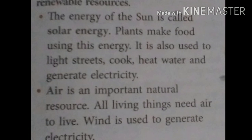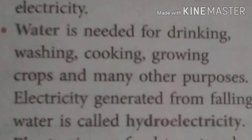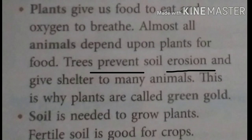The energy of the sun is called solar energy. Plants make food using this energy. It is also used to light streets, heat water and generate electricity. Air is an important natural resource — all living things need air to live. Wind is used to generate electricity. Water is needed for drinking, washing, cooking, growing crops and many other purposes. Electricity generated from falling water is called hydroelectricity. Plants give us food to eat and oxygen to breathe. Almost all animals depend upon plants for food. Trees prevent soil erosion and give shelter to many animals. This is why plants are called green gold. Soil is needed to grow plants. Fertile soil is good for crops.